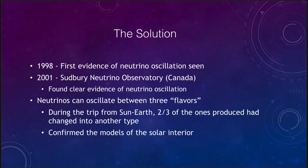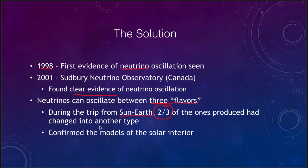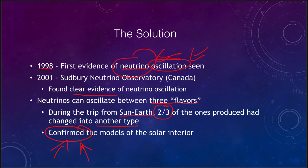In 1998, we saw the first evidence of neutrino oscillation — that neutrinos could oscillate from one form to another. A couple of years later we found clear evidence, confirming that neutrinos have a little bit of mass and can oscillate between three flavors. During the trip from the Sun to the Earth, two-thirds of the neutrinos produced had changed into another type that could not be detected. In all, the solar neutrino problem confirmed models of the solar interior but also taught us something new about neutrinos — that they could oscillate between different flavors.